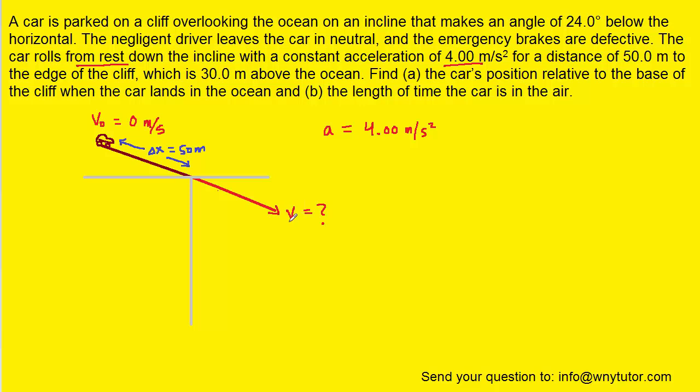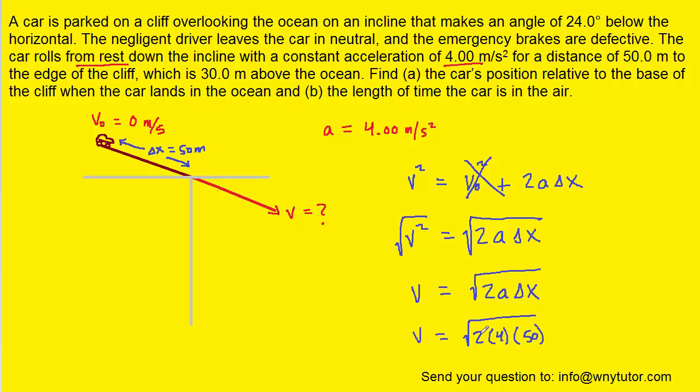Now we can calculate the final speed of the car using the following formula from kinematics. We recall that the initial speed of the car was 0, so that actually eliminates this term from the formula. Then to calculate the final speed, we can take the square root of both sides of the equation. We'll go ahead and plug in the known values for the acceleration and the displacement. When we calculate that, we get exactly 20.0 meters per second as the final speed that the car has when it leaves the edge of the cliff.